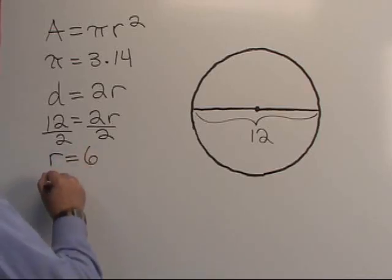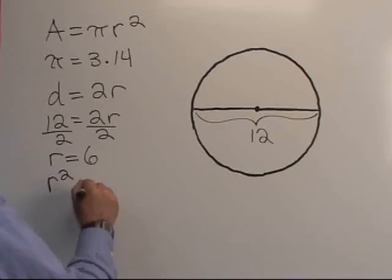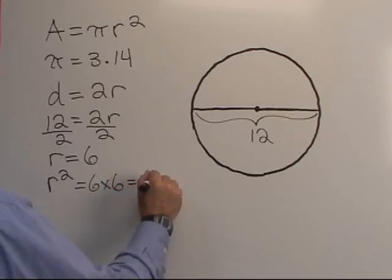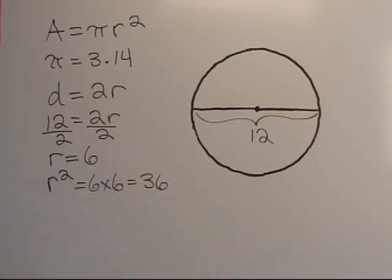r squared equals 6 times 6, which is 36. So now we have all the information we need to solve the equation.